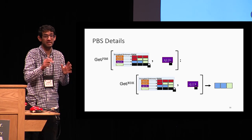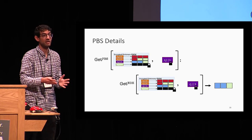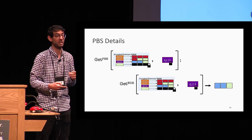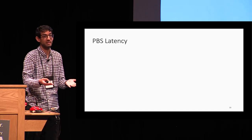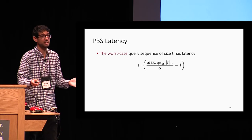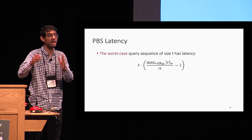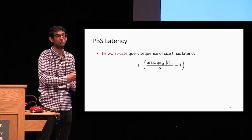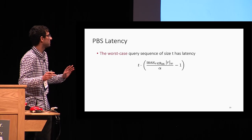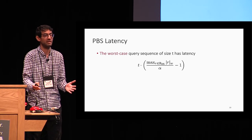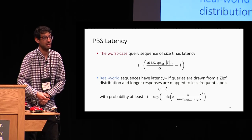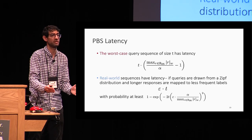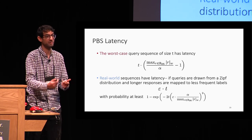As you can notice, all responses have exactly size three — all of them. However, we had a query sequence of two queries but had to apply the token algorithm three times, introducing query latency. In the worst case, a query sequence of size T has latency T times the maximum response length over the batch size minus one. This happens when all labels are associated to the maximum response length. In practice, queries and response lengths are Zipf-distributed, and in such a setting the query latency is shown to be much smaller, with high probability, when parameters are fixed appropriately.